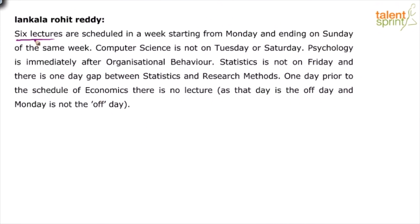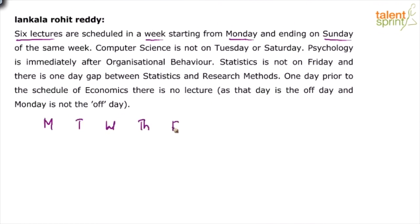There are six lectures to be scheduled in a week starting from Monday and ending on Sunday. We have seven days — Monday to Sunday — but only six lectures, so it is obvious that one of these days is going to be a holiday or off day. We need to arrange these six lectures across Monday, Tuesday, Wednesday, Thursday, Friday, Saturday, and Sunday.